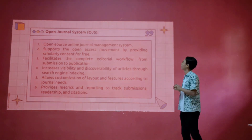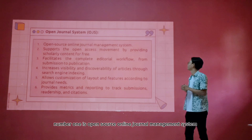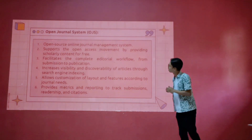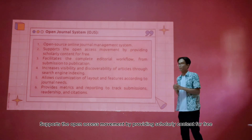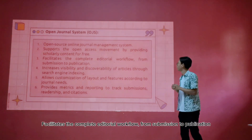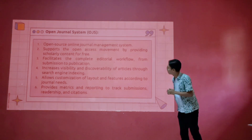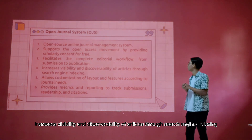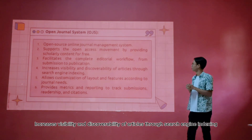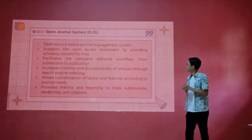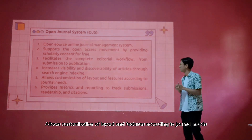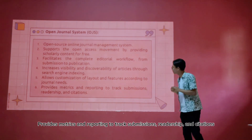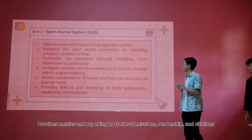The last one is ICT publication using the Open Journal System, or OJS. The Open Journal System: number one is open source online journal management system; number two is to support the open access movement by providing content for free; number three is to facilitate the complete editorial workflow from submission to publication; number four is to improve discoverability of articles through search engine implementation; number five is to allow customizing of layout and filtering according to journal needs; and the last one is provides monitoring and reporting to track submissions, review, and progression.